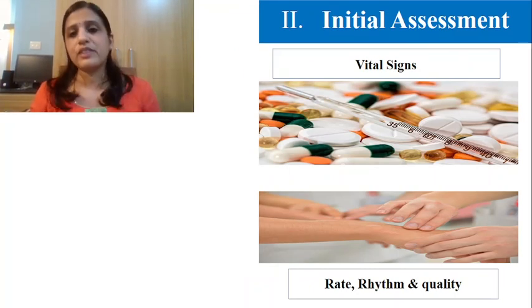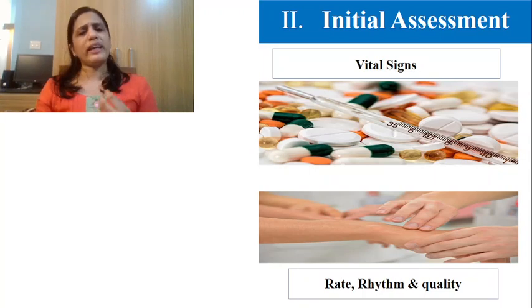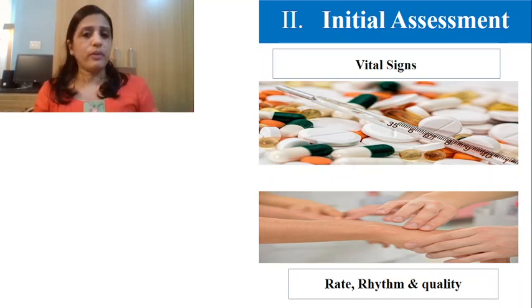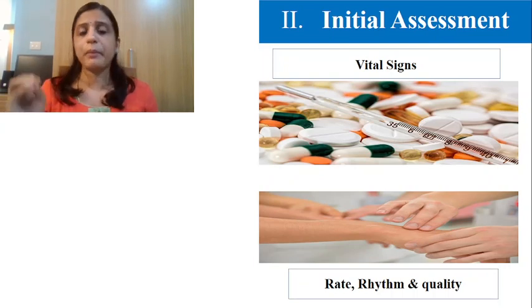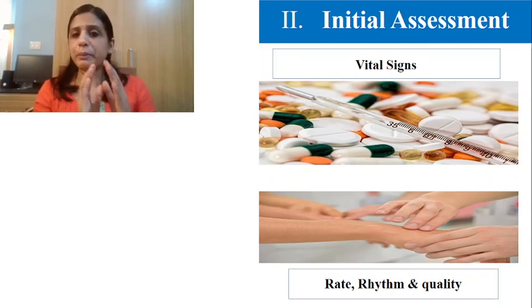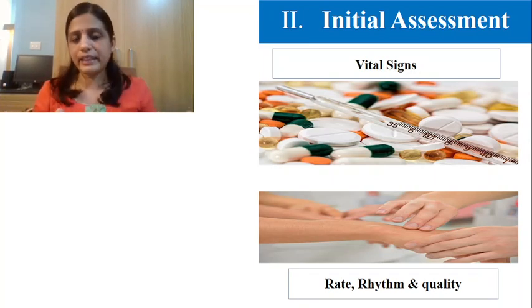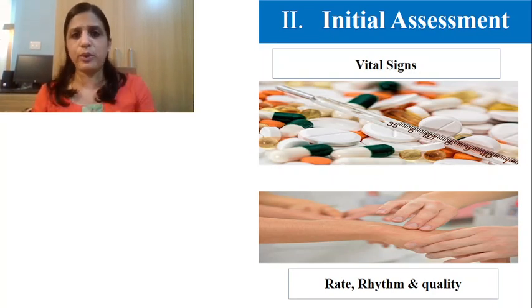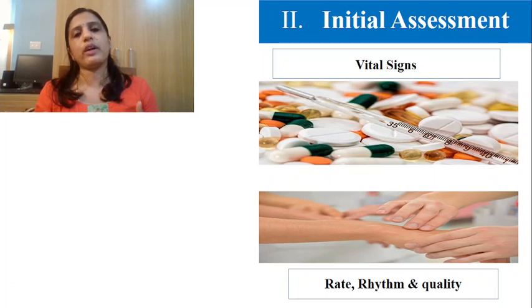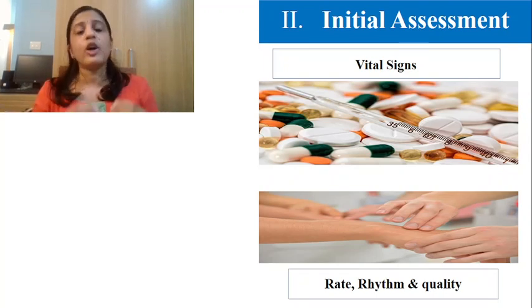Next in the initial assessment, we check vital signs, which give a lot of information about the patient's condition. We check temperature. The most important is the pulse — we check rate, rhythm, and quality. The rate should be between 60 to 100; below 60 is bradycardia, above 100 is tachycardia. Rhythm should be regular; an irregular rhythm is called arrhythmia. Quality of the pulse should be strong; in cardiogenic shock the pulse may be very thready or even a collapsing pulse.